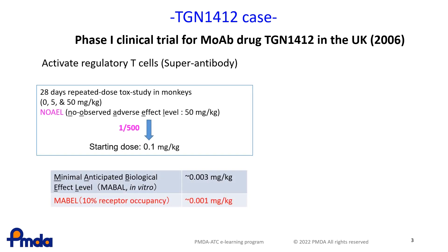For the initial human dose of the pharmaceutical agent, 0.1 mg/kg — which is 1/550 mg/kg of the NOAEL, as determined by a repeated-dose toxicity study in monkeys — was administered as a safe initial dose to healthy individuals.